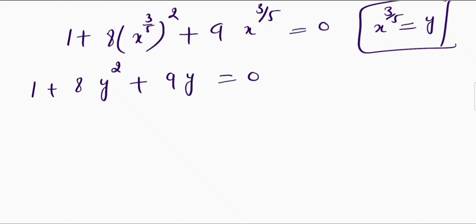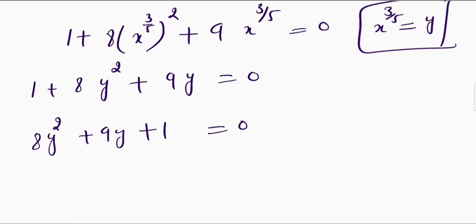Now I can rewrite this equation as 8y squared plus 9y plus 1 is equal to 0. This is a quadratic equation and I can solve it by using the mid-term split method.